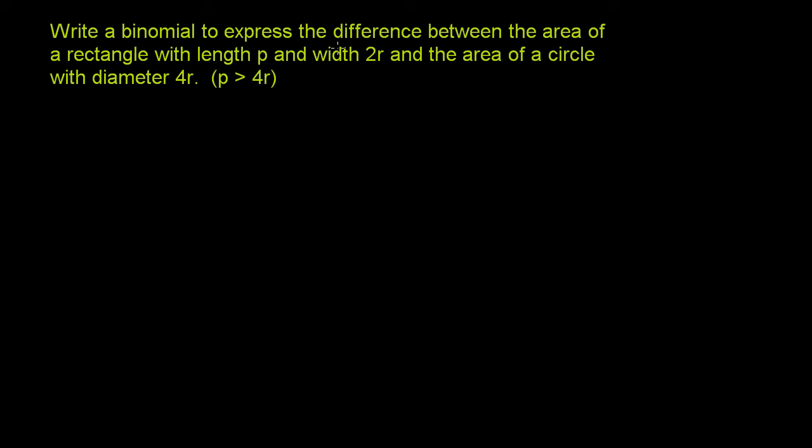Write a binomial to express the difference between the area of a rectangle with length p and width 2r and the area of a circle with diameter 4r, where p is greater than 4r. The first thing that might be confusing is what's a binomial? A binomial is an expression with two terms.